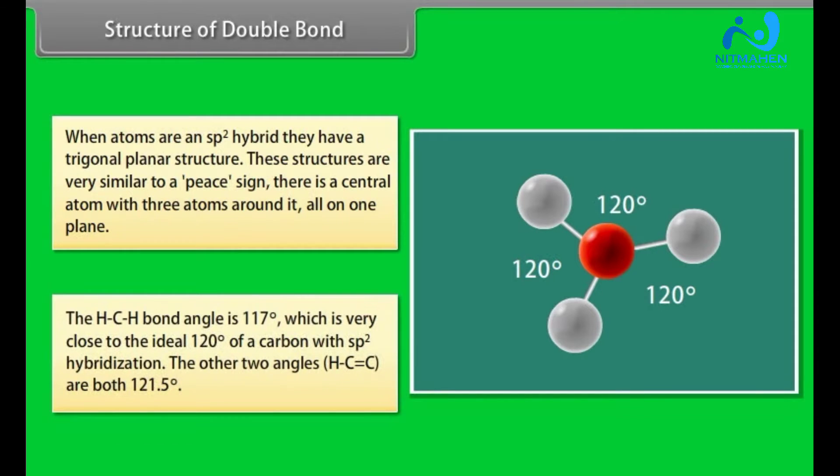The HCH bond angle is 117 degree, which is very close to the ideal 120 degree of carbon with sp2 hybridization. The other two angles, HCC, are both 121.5 degrees.